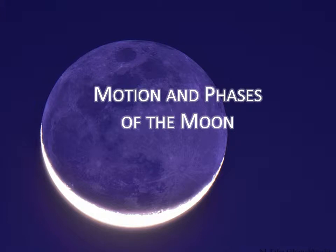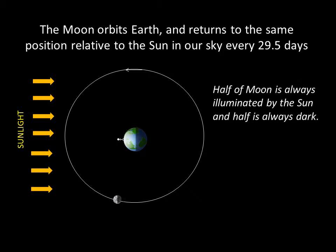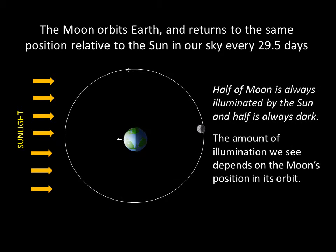Have you ever wondered why we see phases of the Moon? It all has to do with the geometry of the Earth, Moon, and Sun. The Moon orbits the Earth and returns to the same position relative to our Sun in the sky every 29 and a half days. The thing to remember is that half of the Moon is always illuminated by the Sun and half is always dark. No matter where the Moon is in its orbit, half is bright and half is dark. The amount of illumination we see depends on the Moon's position in its orbit. This is why we see lunar phases.